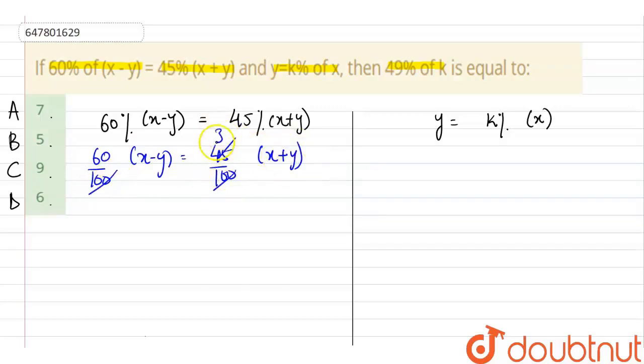100, 100 cancel out. 15 threes are, 15 fours are. So, we will have 4 times x minus y is equals to 3 times x plus y. Now, simplifying we get x plus y upon x minus y is 4 by 3.